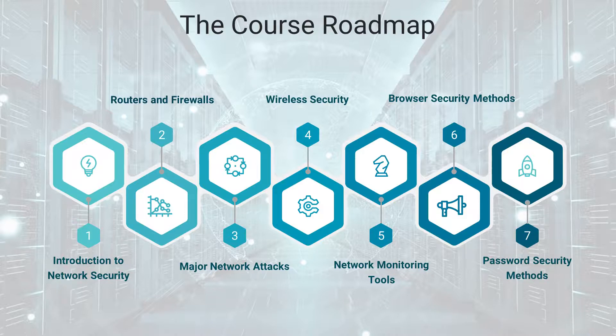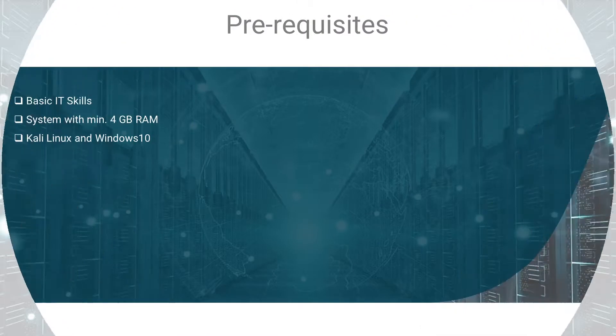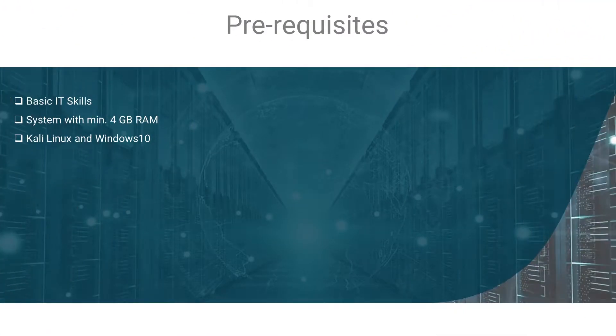Those are the seven sections in this course. For prerequisites, you should have basic IT skills like software installation. Your system should have at least 4GB of RAM, and you need to install Kali Linux and Windows 10. That's all about the course overview — thank you so much for your time, and I'll see you inside the course.